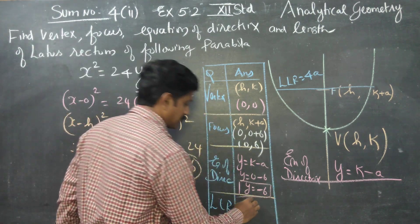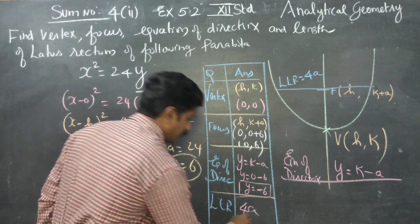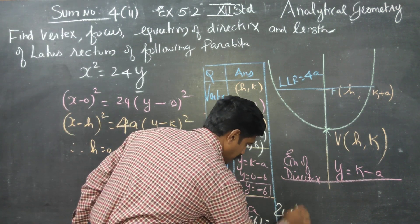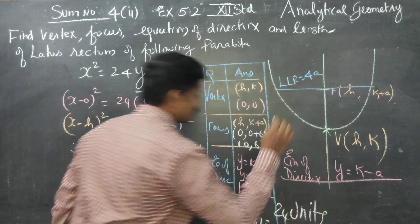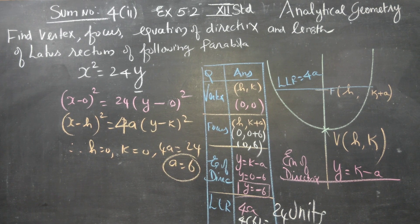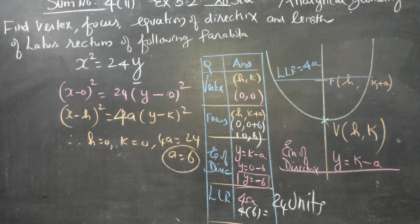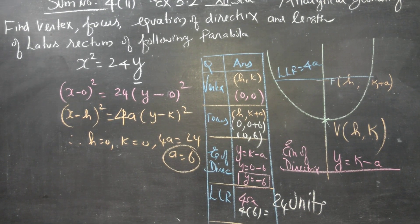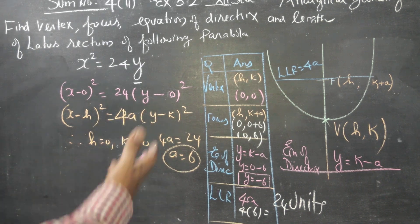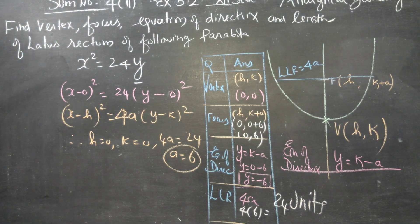Length of lattice rectum is 4a. a equals 6, so 4 into 6. The answer is 24 units. This is my length of lattice rectum. Always draw a diagram associated with the question — it will be very easy for you to analyze the sum, construct the formulas, and complete the sum. Thank you.